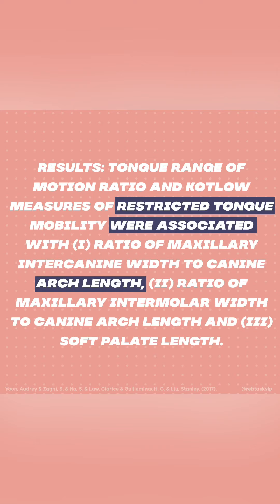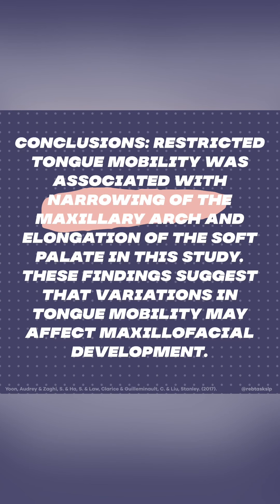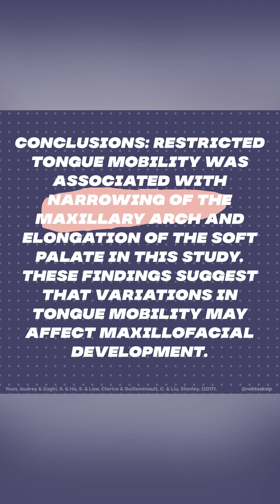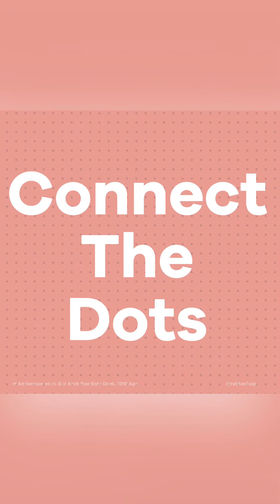What does this mean for us? Well, the authors' conclusions are that restricted tongue mobility was associated with narrowing of the maxillary arch and elongation of the soft palate in this study. These findings suggest that variations in tongue mobility may affect maxillofacial development. Findings from this article indicate there is a correlation between a tongue restriction due to the frenulum and the palatal vault height and shape.